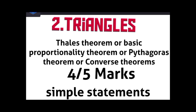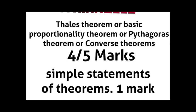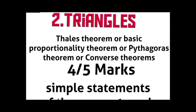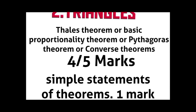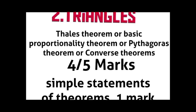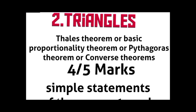In the second chapter, Triangles: Thales theorem, basic proportionality theorem, Pythagoras theorem, or their converse theorems carry four or five marks. Every year one question of four or five marks comes. Simple statements or definitions of theorems carry one mark. Note that the triangles chapter sometimes carries seven to eight marks.